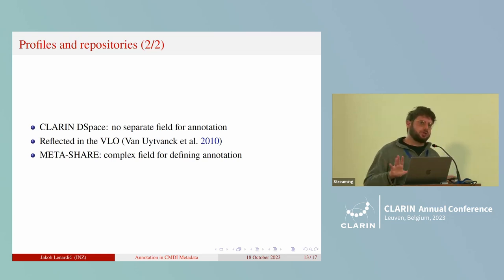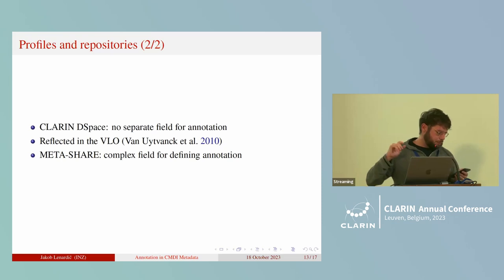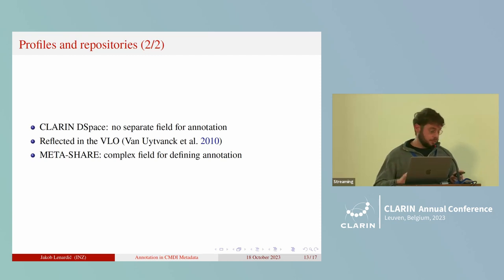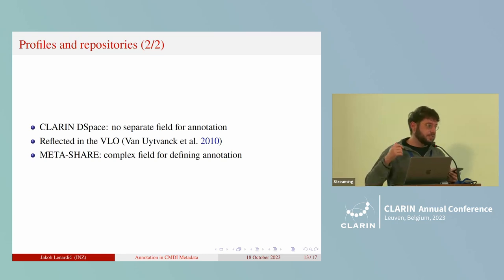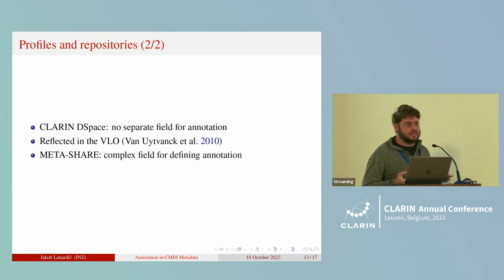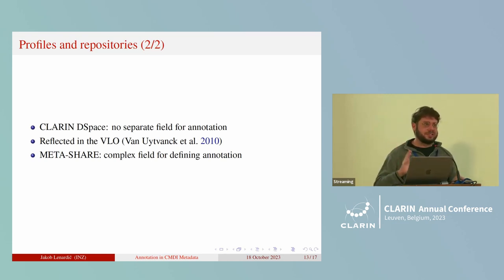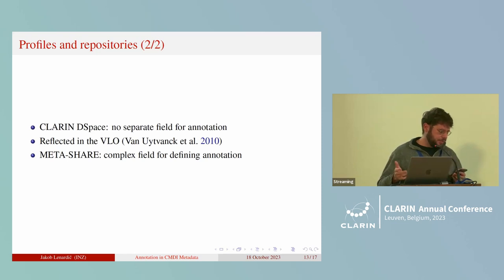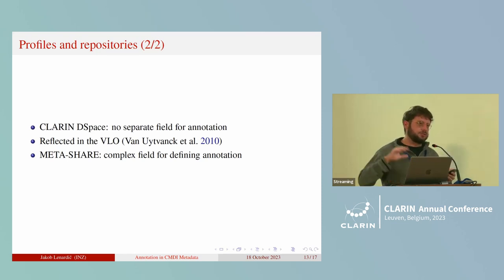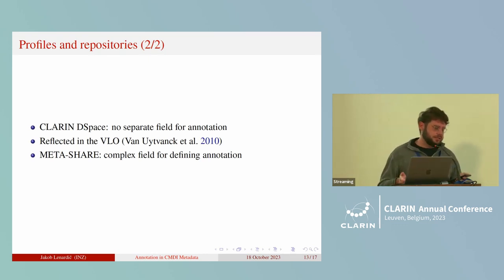This DSpace approach of skipping over annotation is architecturally reflected in the VLO, where it is possible to search for resources by things like modality, keywords, and resource type, but not annotation type. This presents a problem of recall if the user is interested in a specific aspect of annotation, and many external CLARIN users are interested in exactly that. By contrast, Metashare repositories present a complex field allowing depositors to define annotation in a highly structured and recursive manner for each type and modality separately.